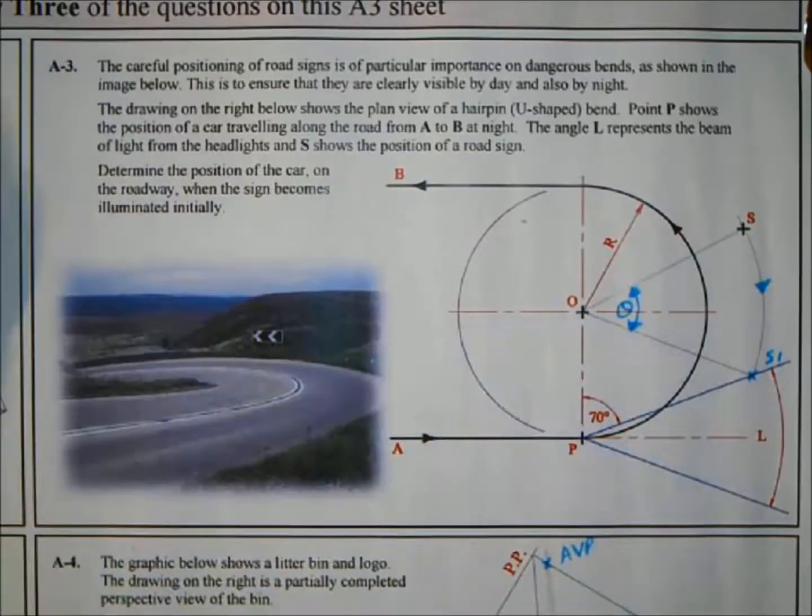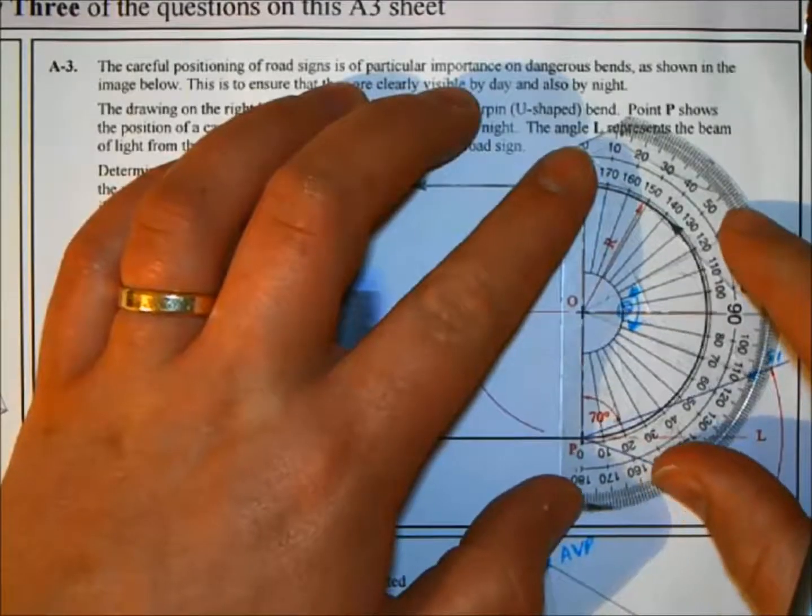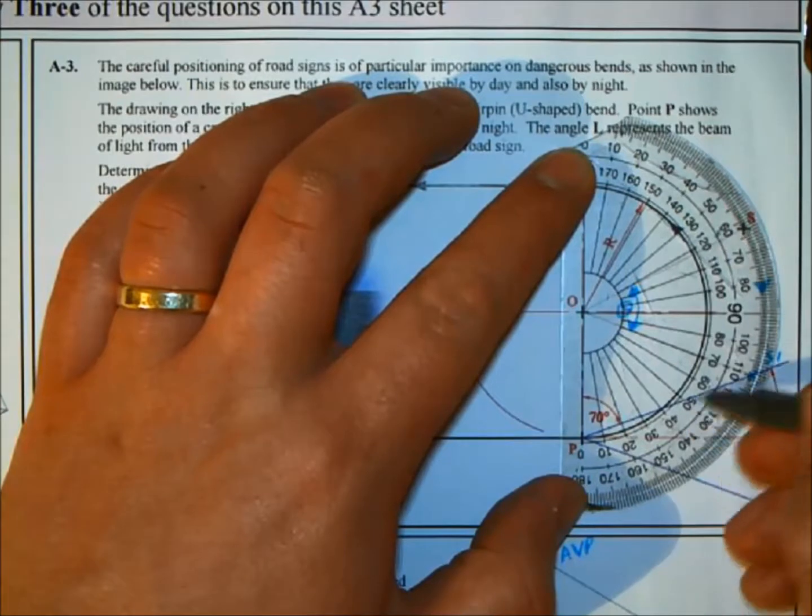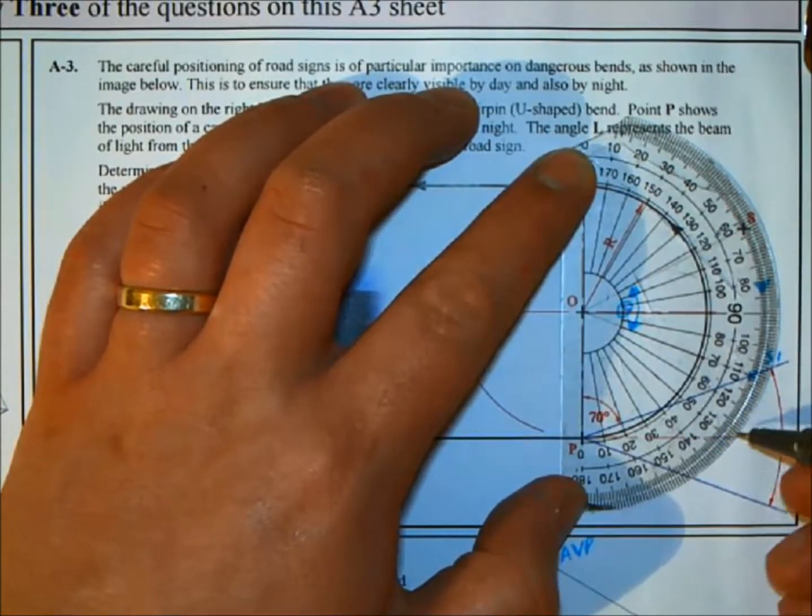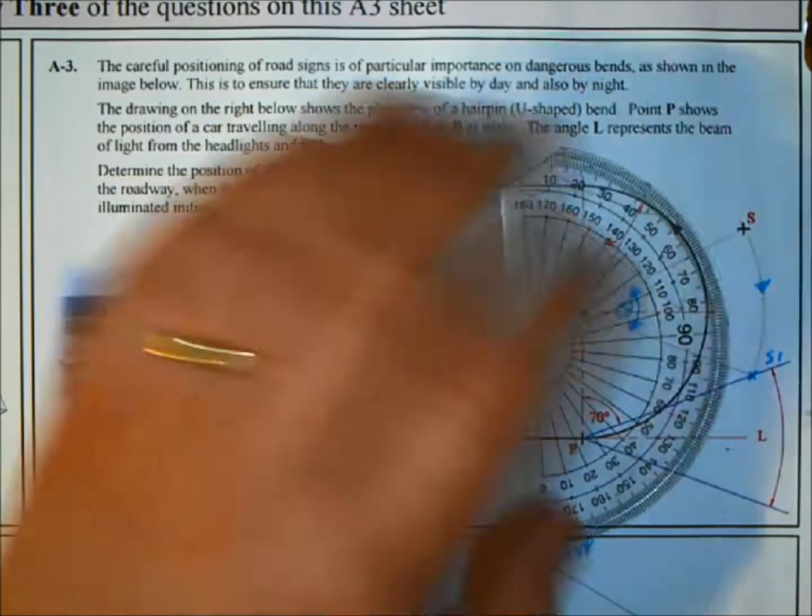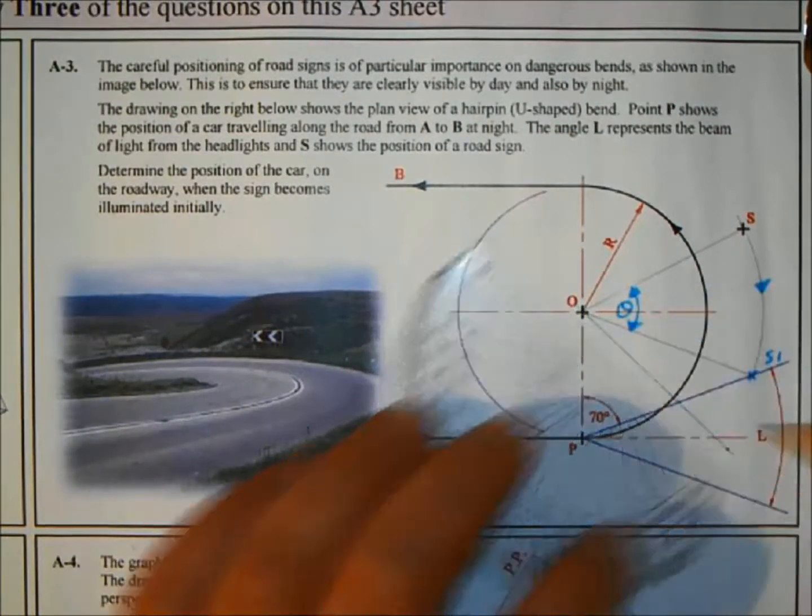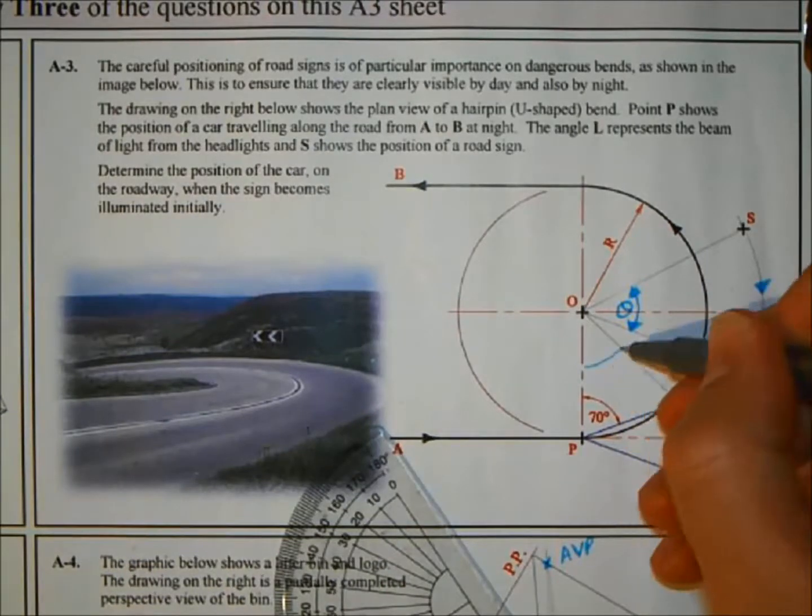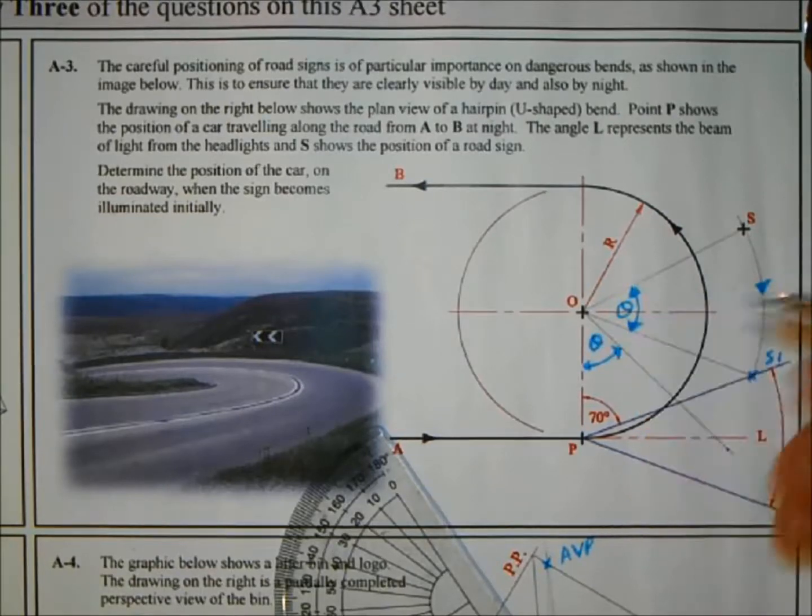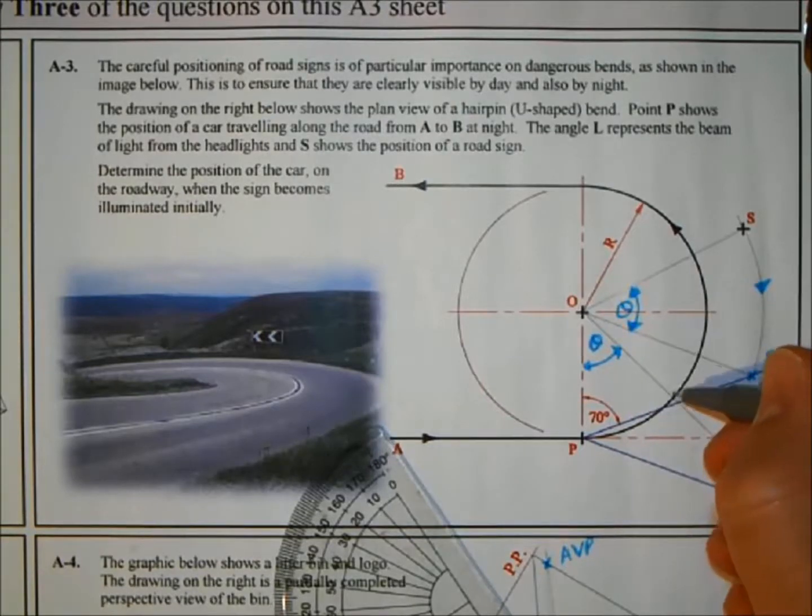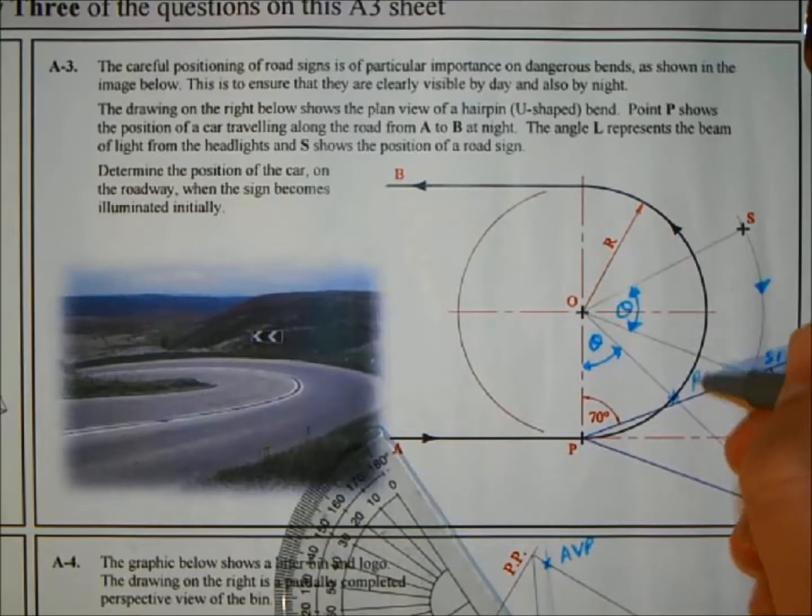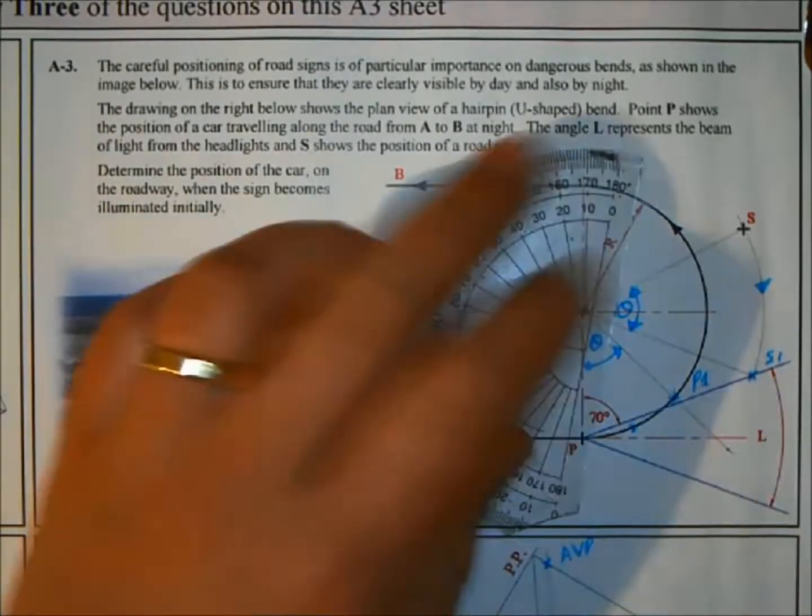That angle now is the same, and now we've rotated the car around point O. This point here is point P1, and we rotated point P up to show exactly where point P would have to be for that sign to be illuminated first.